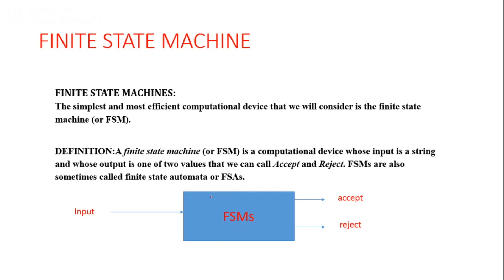It is an abstract machine whose input is a string and whose output is one of two values: accept or reject. That means it is going to accept or reject. FSMs are also called finite state automata or in short FSAs. For example, consider a string matching function as a machine — in the FSA machine the input will be a string and the output will be either accept or reject based on the string matching function.